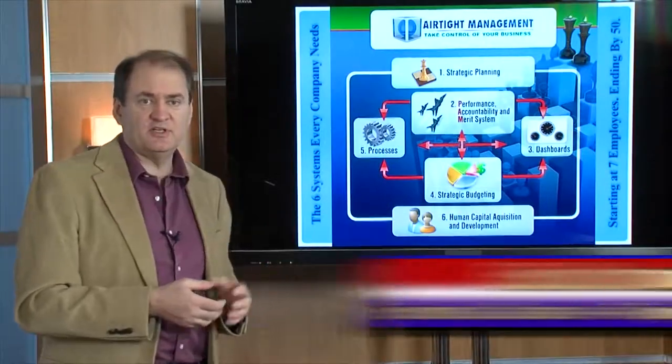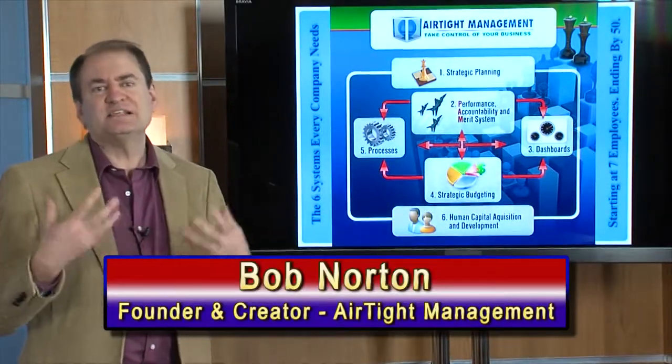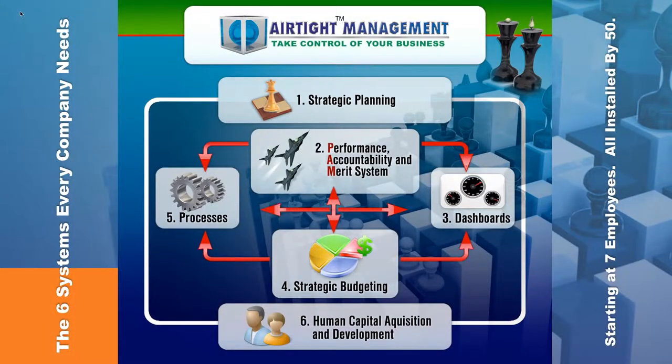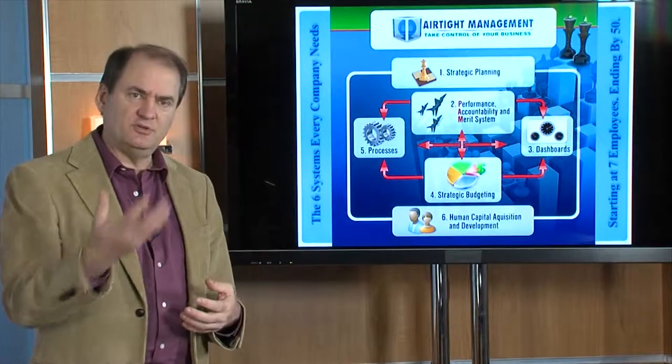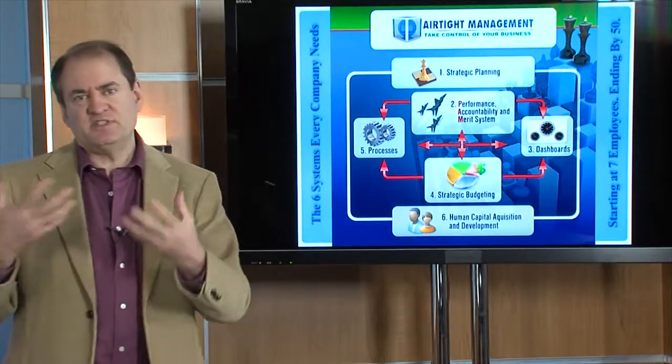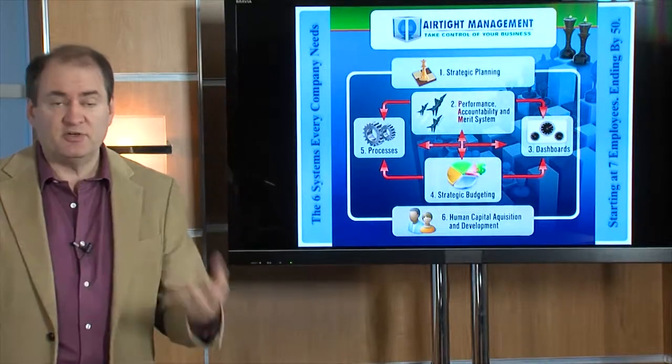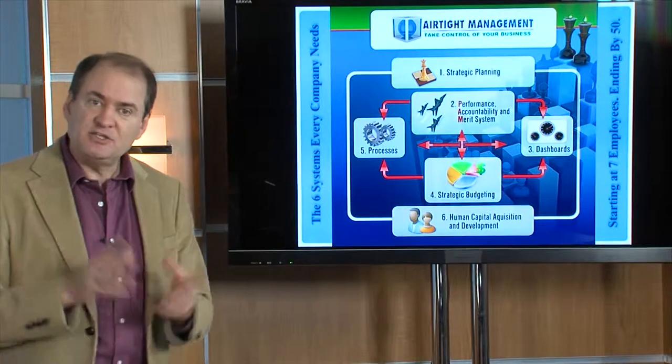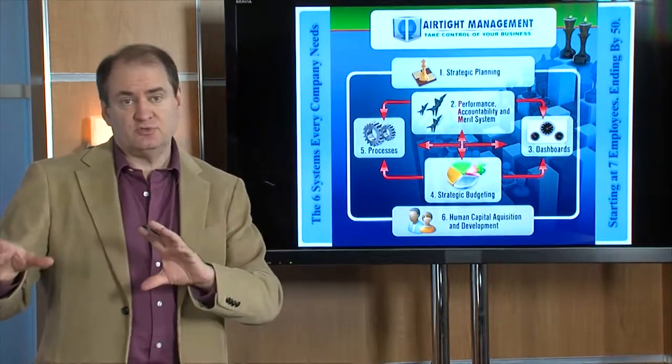The fifth system of Airtight Management is process documentation. A small business might have as few as half a dozen or a dozen proprietary processes that create value in the business. A more sophisticated, multidisciplinary business might have 20 processes that it should document.